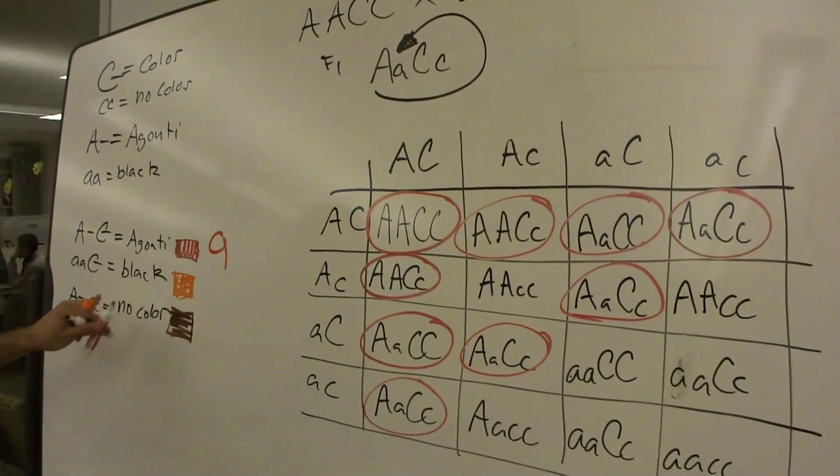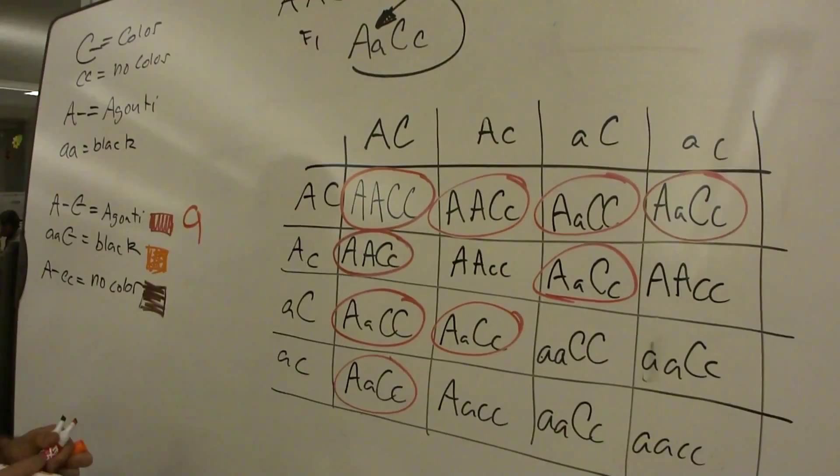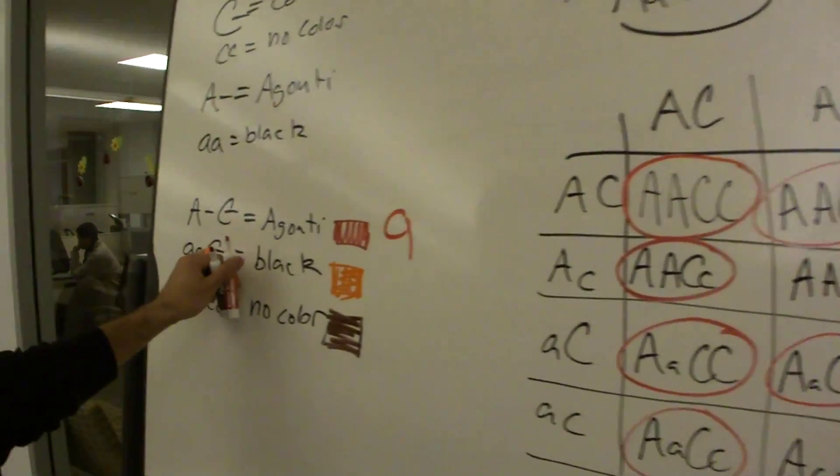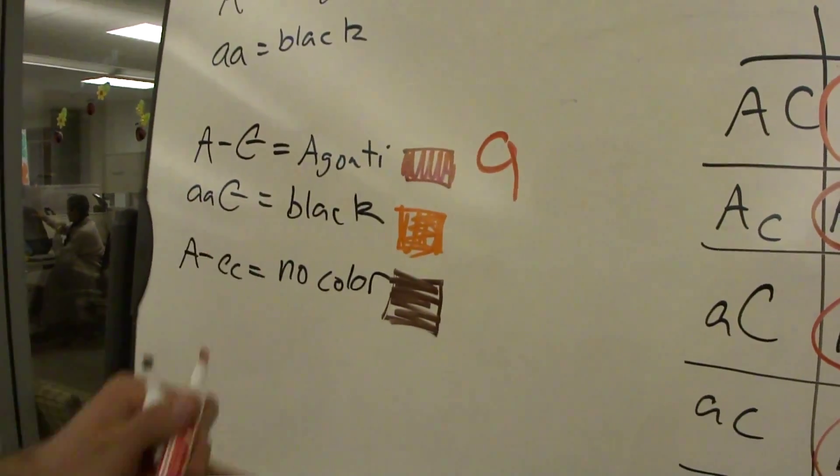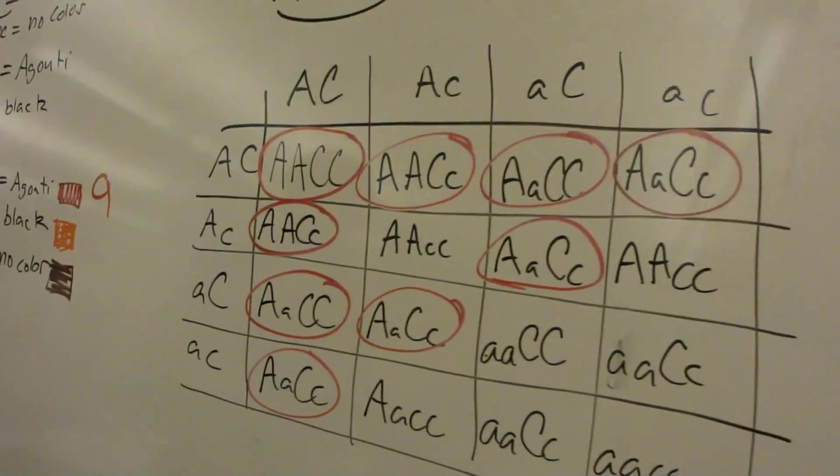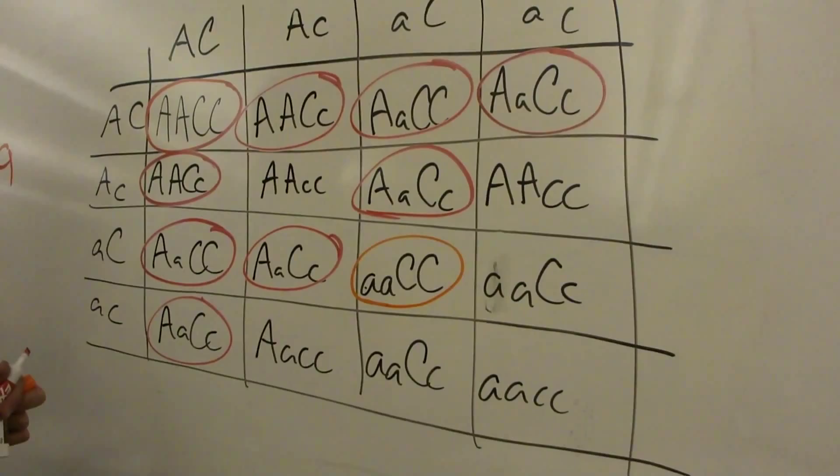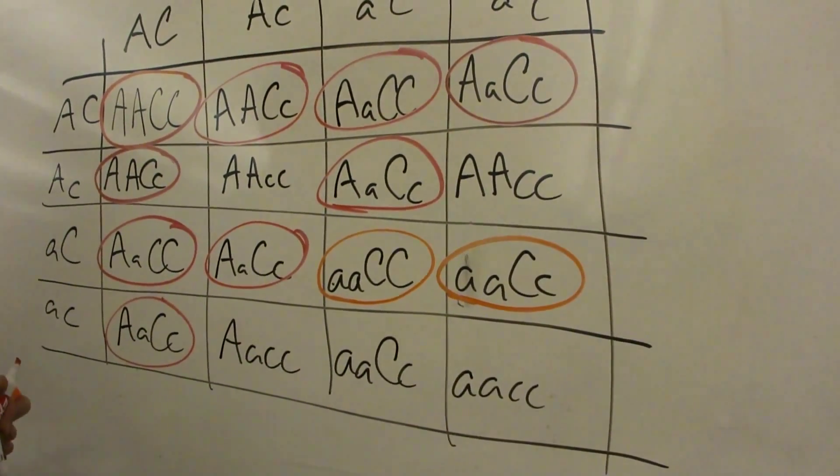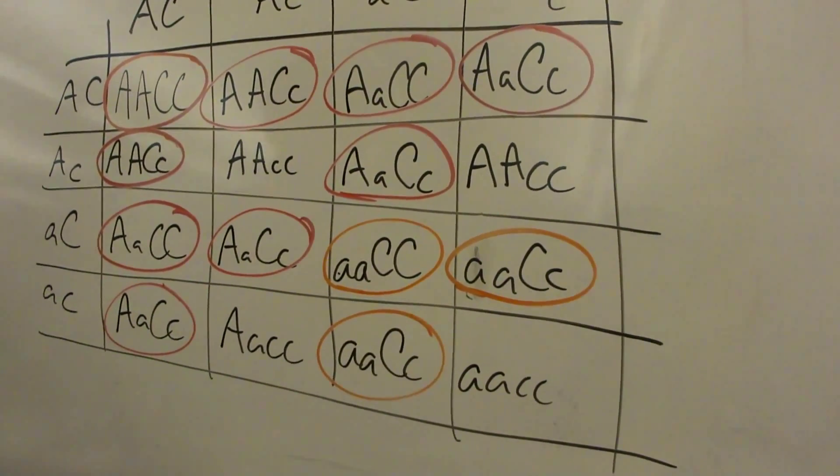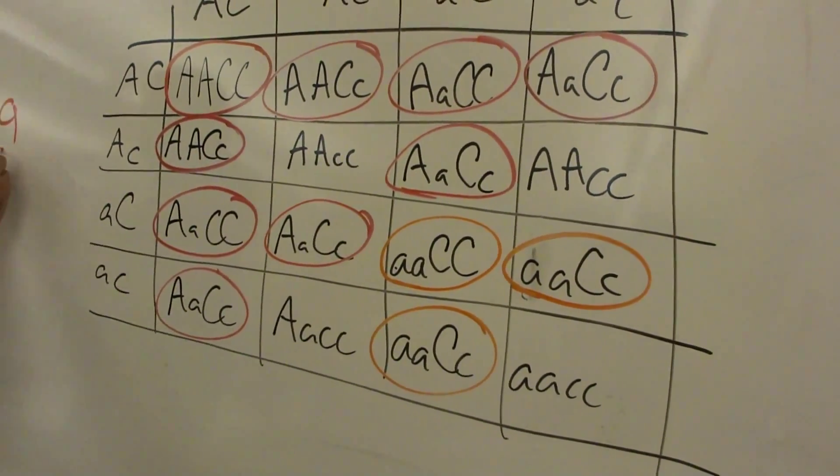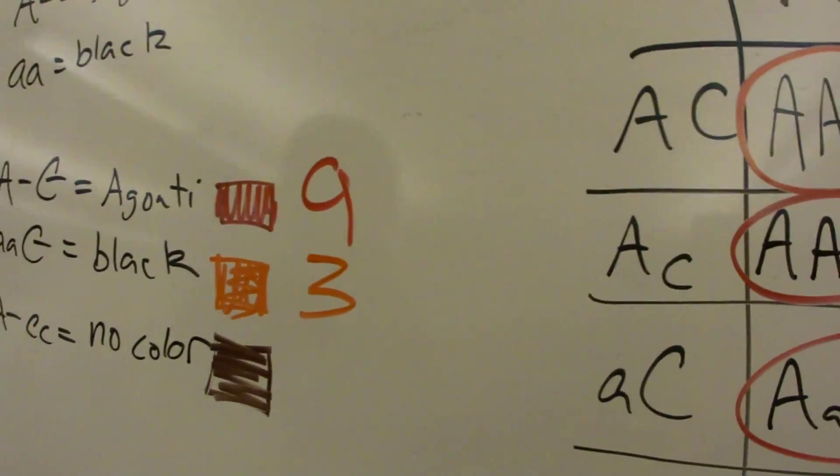Now let's go on to black. Black will be orange. So anything with little a, little a, and any combination of big C. Okay. So here we have little a, little a, big C, big C. Here. And here. And that's it. Three. So we've got red and orange. We're down.